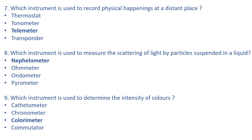Tonometer is used to measure the pitch of a sound. Transponder is used to receive a signal and transmit a reply immediately. Let's come to the next question: which instrument is used to measure the scattering of light by particles suspended in a liquid?